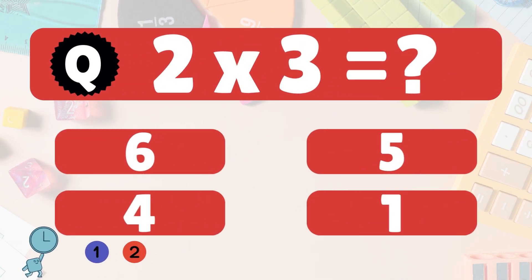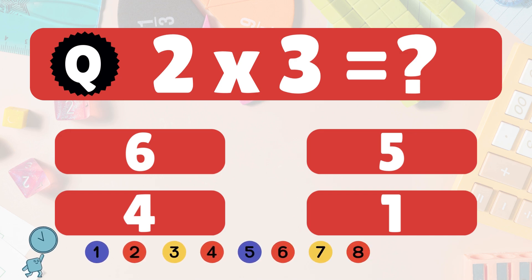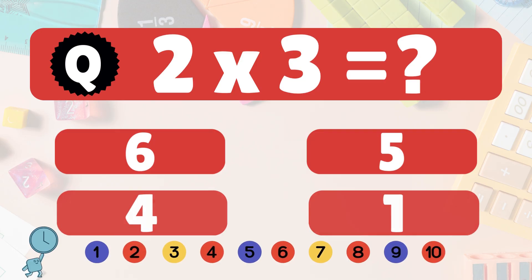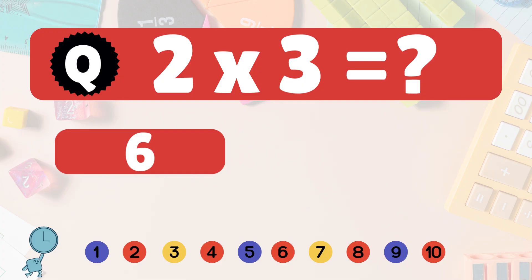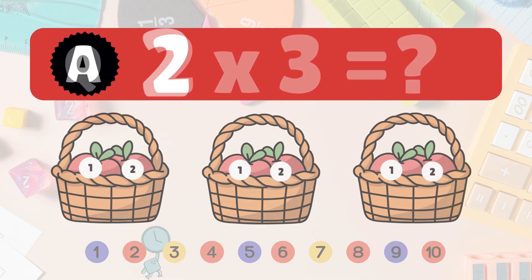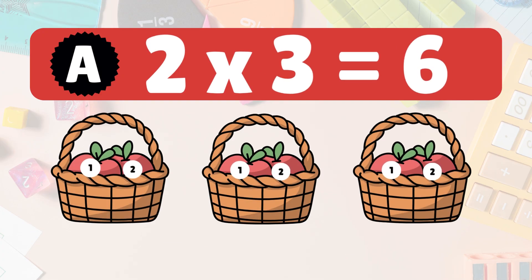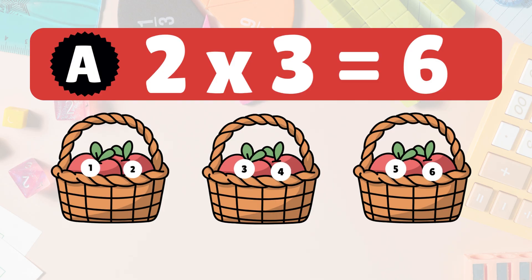Next, 2 times 3 is what? 2 times 3 is 6. Here we have 3 groups of 2 apples each. Let's count them all: 1, 2, 3, 4, 5, 6. So 2 times 3 is 6 apples.